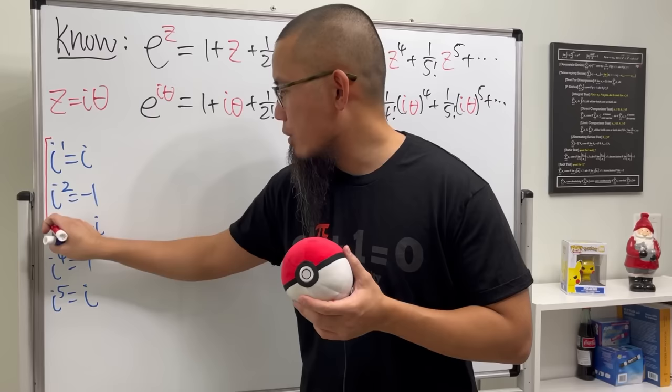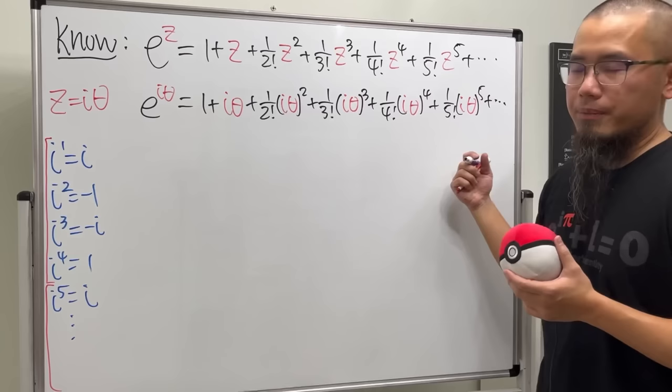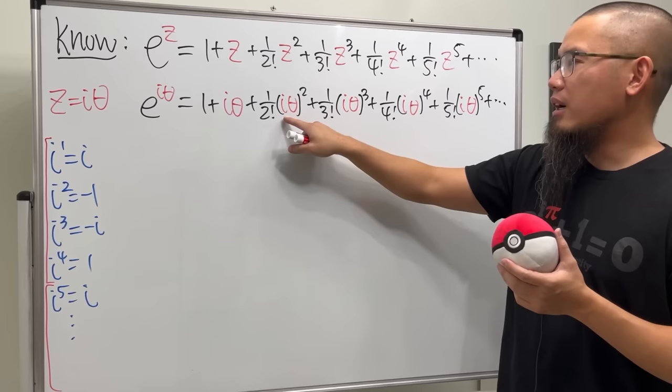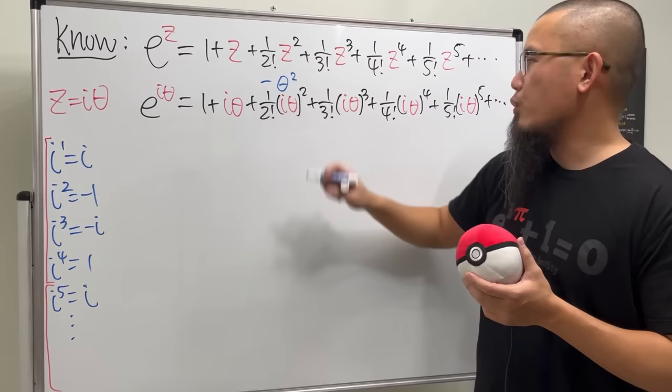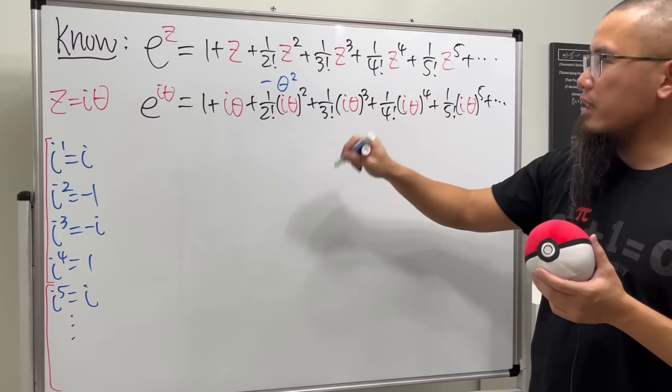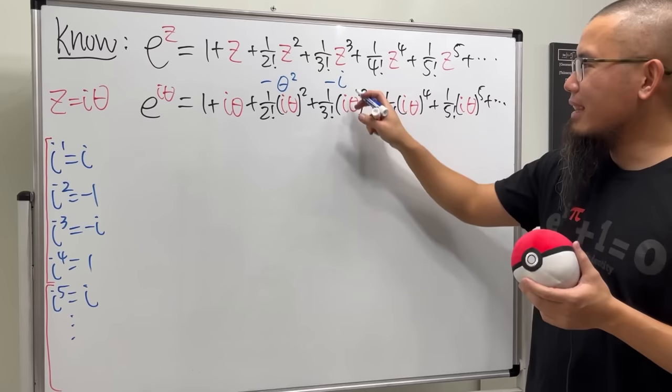All right. So in fact, if you look at this right here, half of them have i, half of them they don't. This is just 1. This is i theta. And this right here, i squared is actually just negative 1. So let me put this down as negative. And we just have theta squared. Okay. This right here, i to the third power, we get negative i. And then theta to the third power. So it's not like alternating for now, right? You see, it's positive, positive, and then negative, negative.